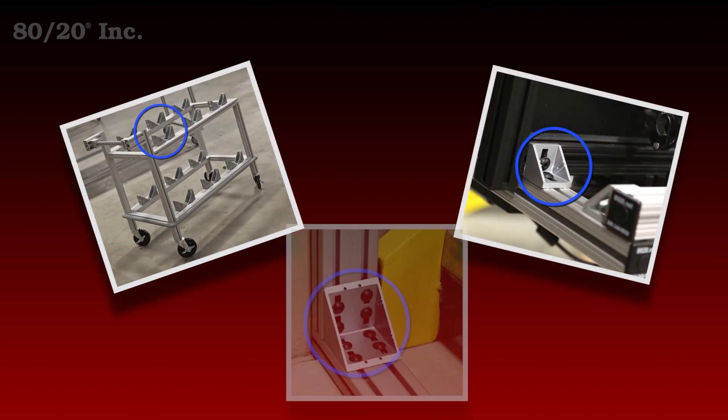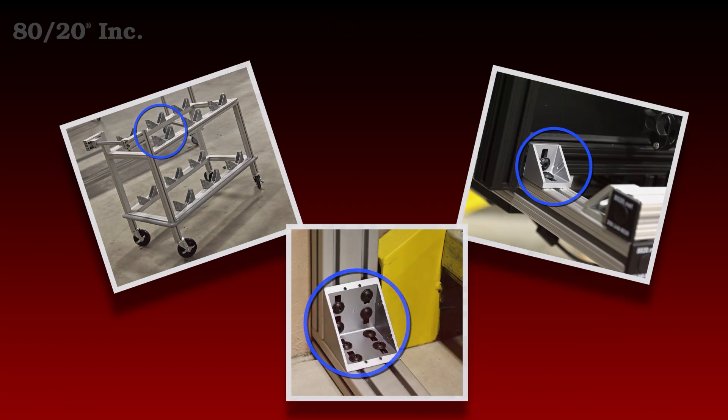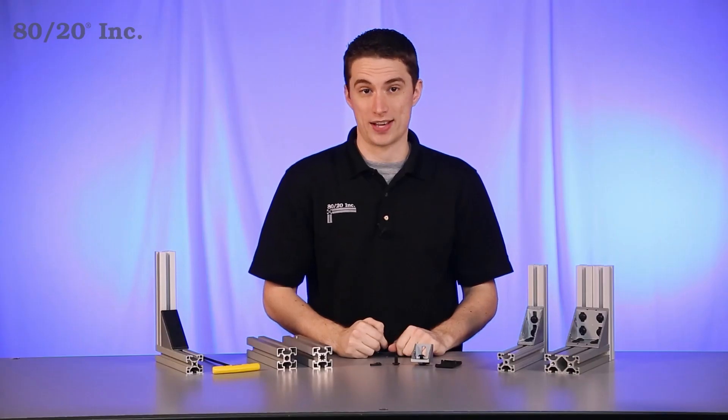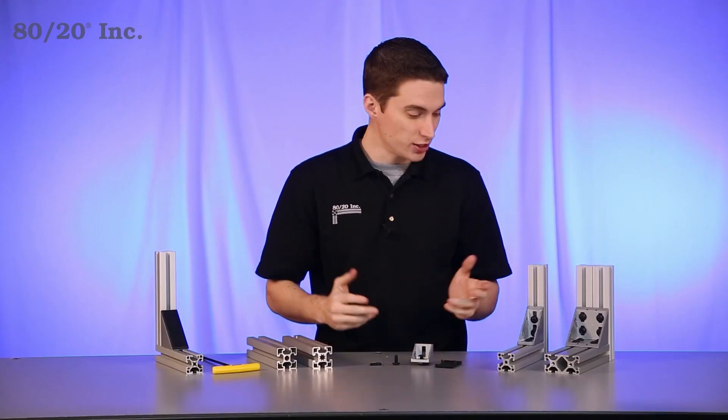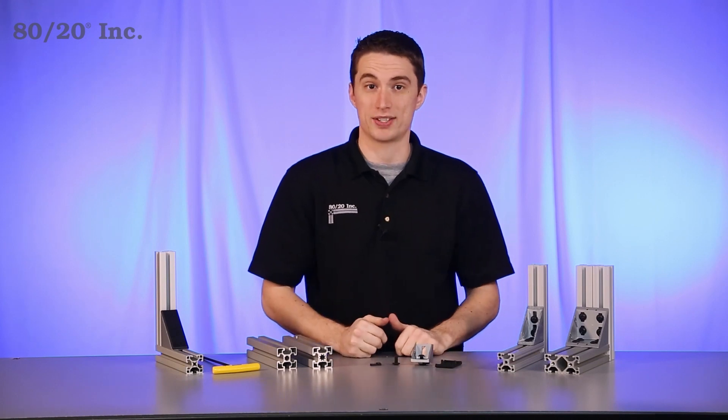When using it, you have a choice. The enclosed corner bracket can be used as a standalone fastening method, or to reinforce another fastening method. Here you can see a small sample of the enclosed corner brackets that 80/20 offers.